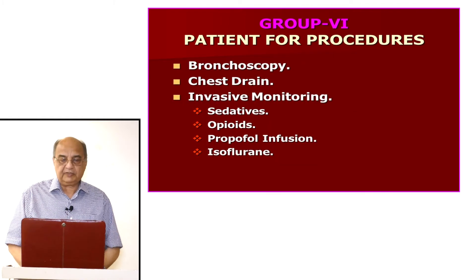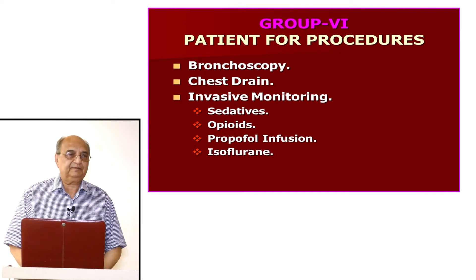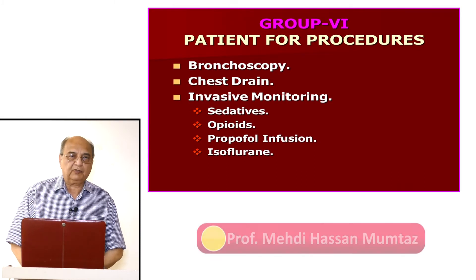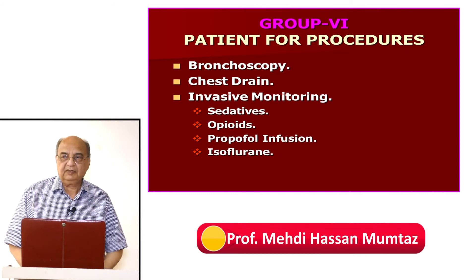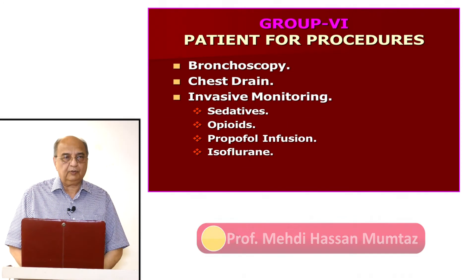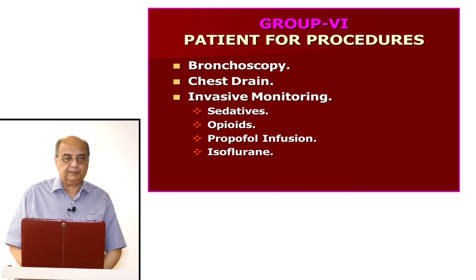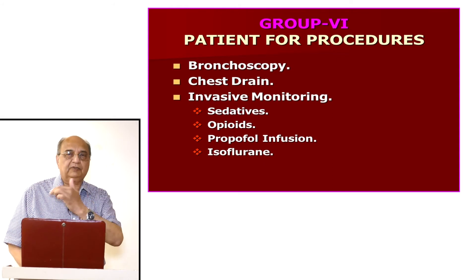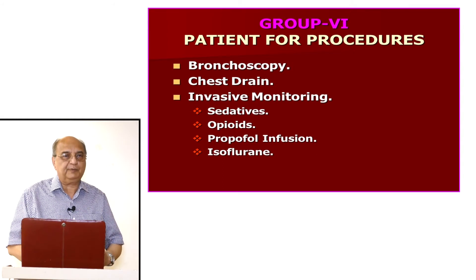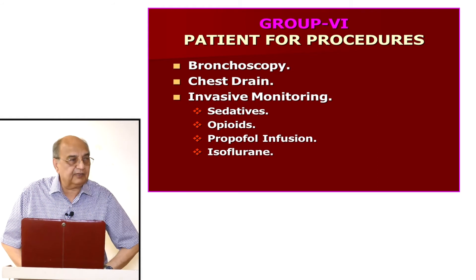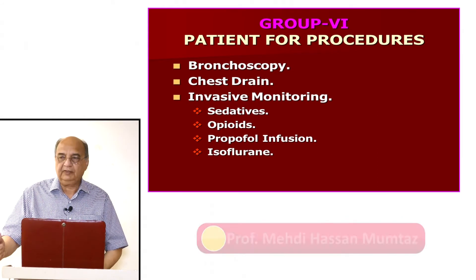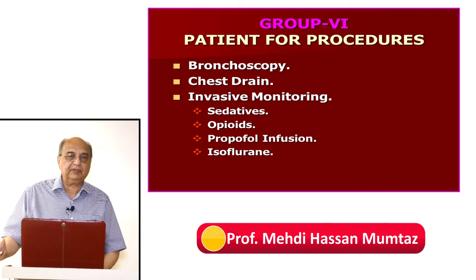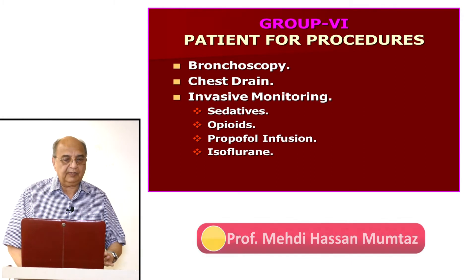Group six is patients undergoing procedures, such as bronchoscopy. A transtracheal injection of local anesthetic is given, local anesthetic is dripped through the nose, and two swabs of local anesthetic are placed on each side of the piriform fossa — numbing the whole respiratory pathway. If the patient is still agitated, you can give a sedative agent such as midazolam on top, and the patient will be cooperative.